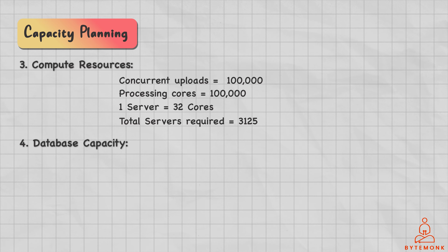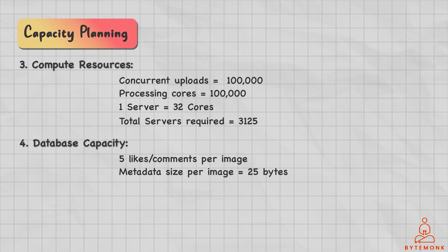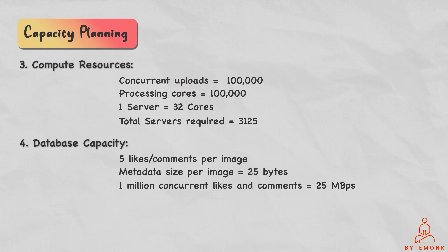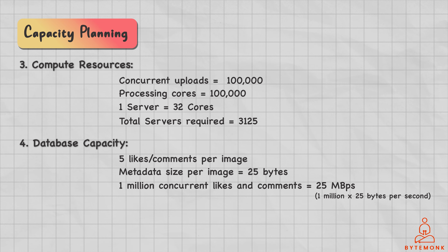As far as our database capacity is concerned, assuming an average of 5 likes or comments per image, each image would require 25 bytes of storage for the likes and comments metadata. So to handle 1 million concurrent likes and comments, the system needs to support a minimum database capacity of 25 Mbps. Overall, these capacity planning requirements show that a system of this scale would require a significant amount of infrastructure, compute resources, and network bandwidth to handle the volume of image uploads, likes, comments, and follow relationships.